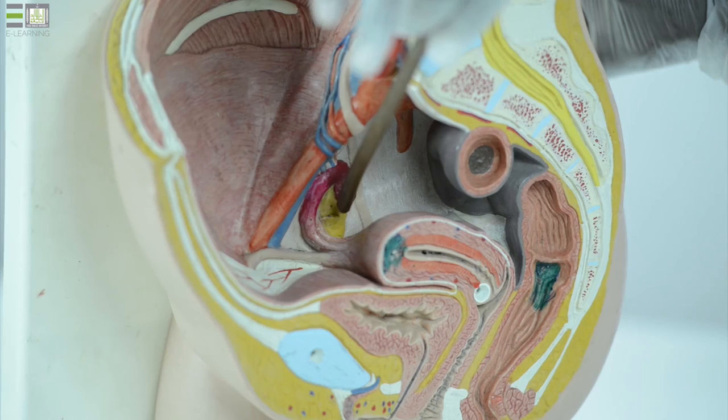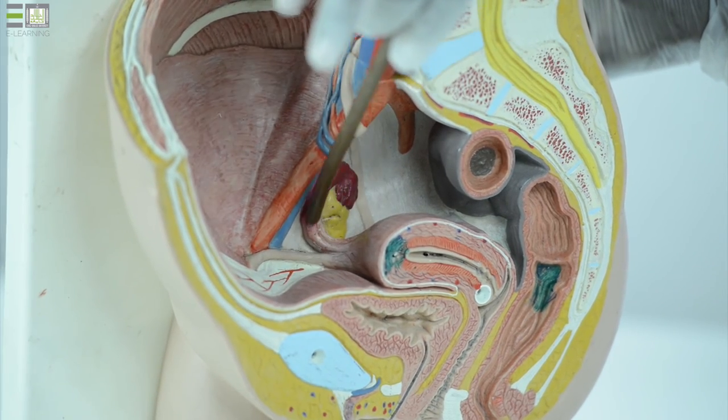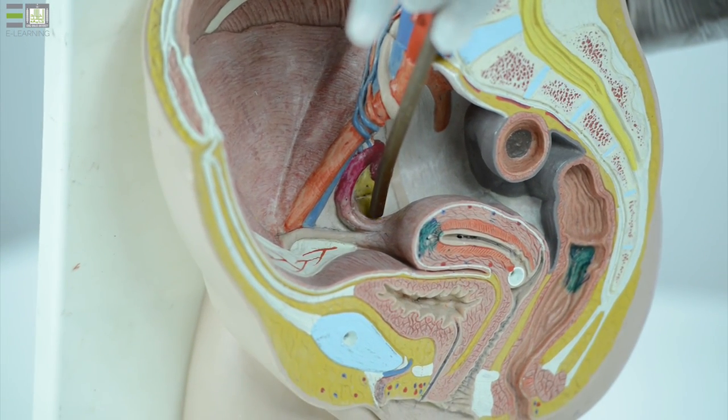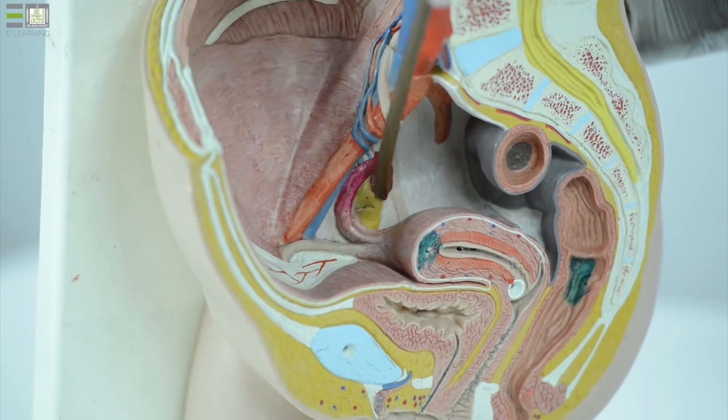we can see the ovary and the fallopian tube with the round ligament of the uterus and the suspensory or ovarian ligament.